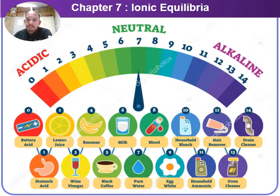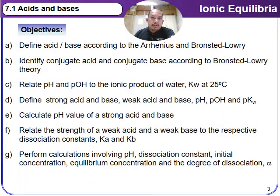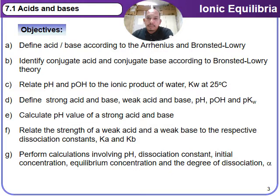In this part of ionic equilibrium, we have three subtopics. Subtopic 7.1 covers acids and bases. The objectives for 7.1 are: (a) to define acid and base according to the Arrhenius and Brønsted-Lowry theories; (b) to identify conjugate acid and conjugate base according to Brønsted-Lowry theory; (c) to relate pH and pOH to the ionic product of water, Kw, at 25°C; and (d) to define strong acid, strong base, weak acid, weak base, pH, pOH, and pKw.